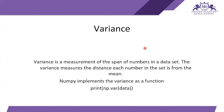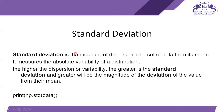Variance is a measurement of the span of numbers in a dataset. It measures the distance each number in the set is from the mean. NumPy implements variance as a function: print(np.var(data)), which gives us the variance of the dataset.